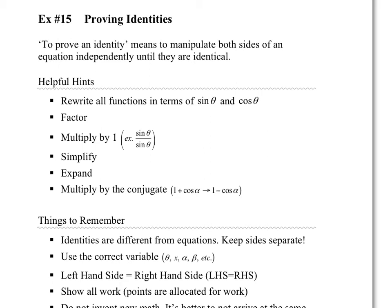Hi students, welcome to exercise 15, proving identities. To prove an identity means to manipulate both sides of an equation independently until they are identical. We kind of introduced that in exercise 13, and we're going to reintroduce that here.